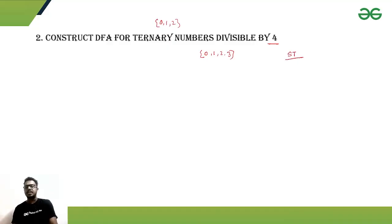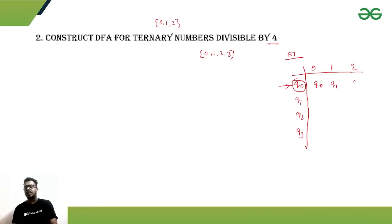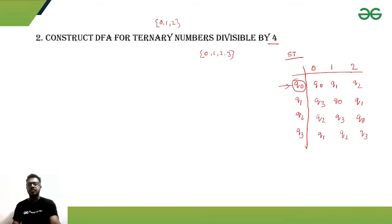For the ternary DFA state table, the three inputs are zero, one, and two, with four states: q0, q1, q2, and q3. Q0 is both the initial state and the final state. The state table is written out with q0, q1, q2, q3 repeated across all three input columns.